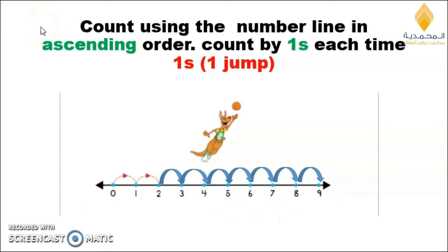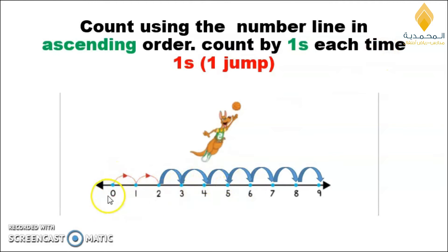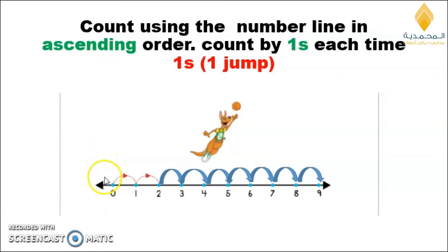This is a question in your book: count using the number line in ascending order, count by ones each time. Look students, this is the number line and these are the numbers on it. Ascending order means we should start from left to right. Repeat after me: from left to right. Excellent!